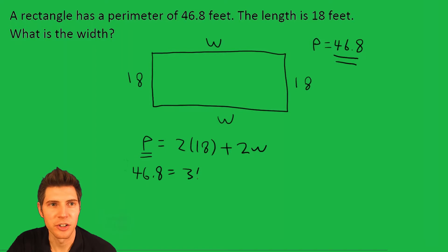2 times 18 is 36 plus 2w. So now if we solve for w, we will know what the width is. Subtract 36 from both sides. 10.8 equals 2w. Then we divide both sides by 2.